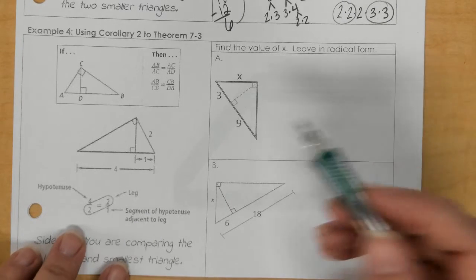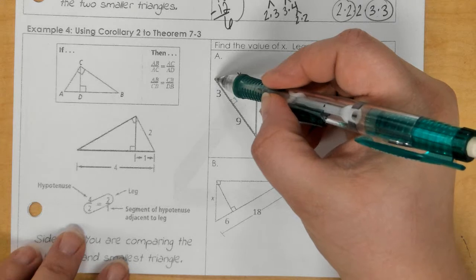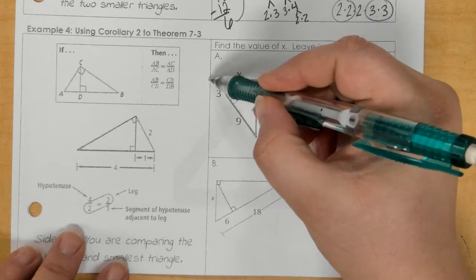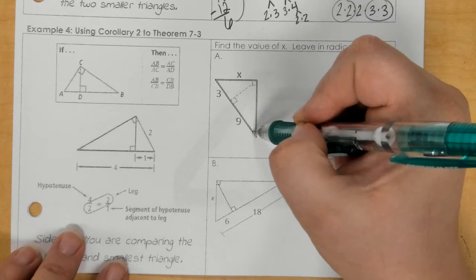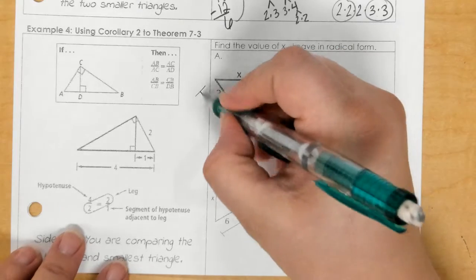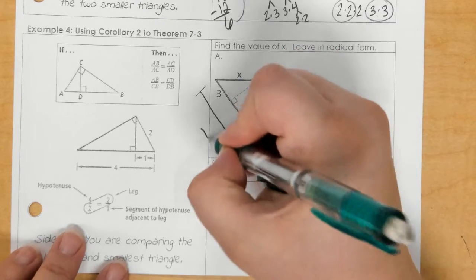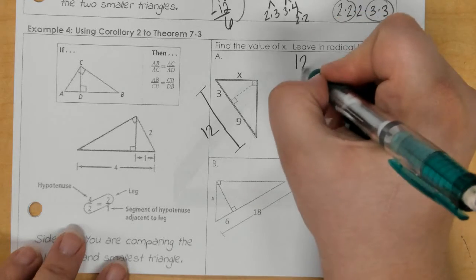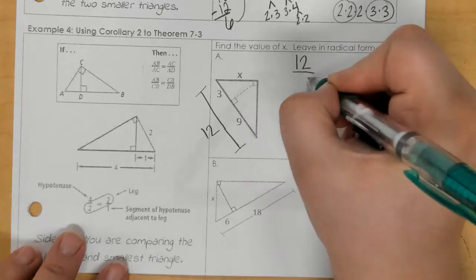But simply, we're going to go like this. We're going to say, what is the entire hypotenuse of this long, or of the bigger triangle? Okay, the hypotenuse here. So, that makes 12. And so, I'm going to go 12 over the leg, x.